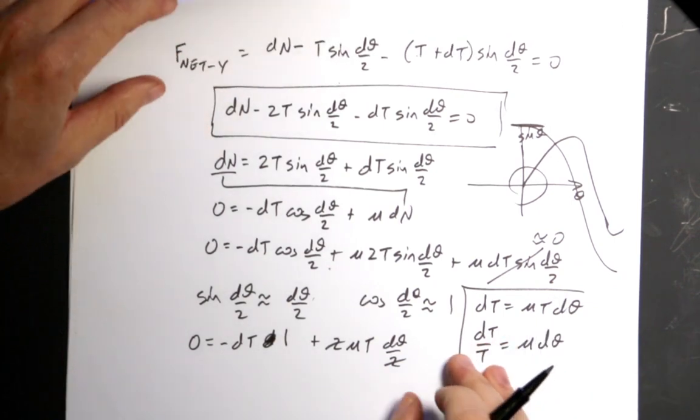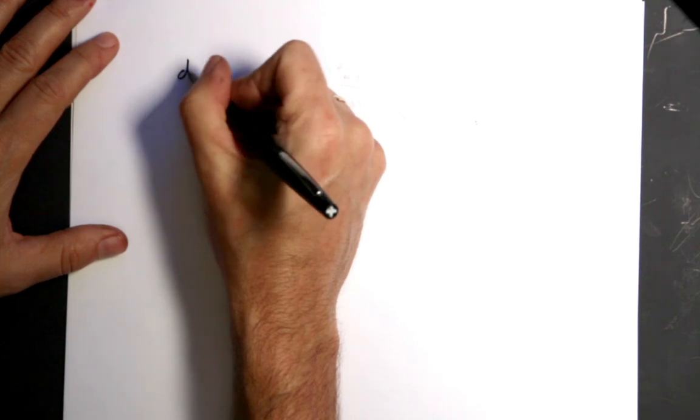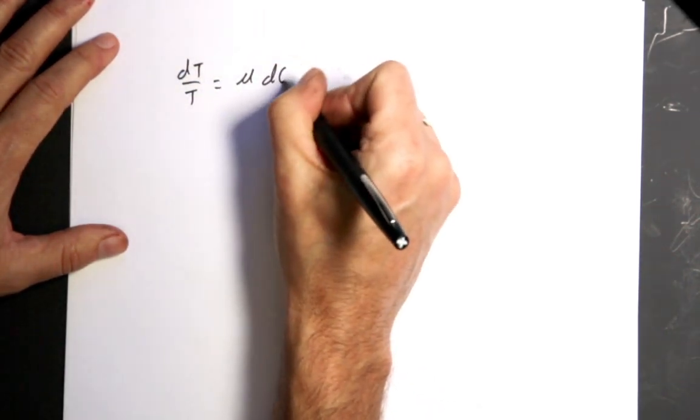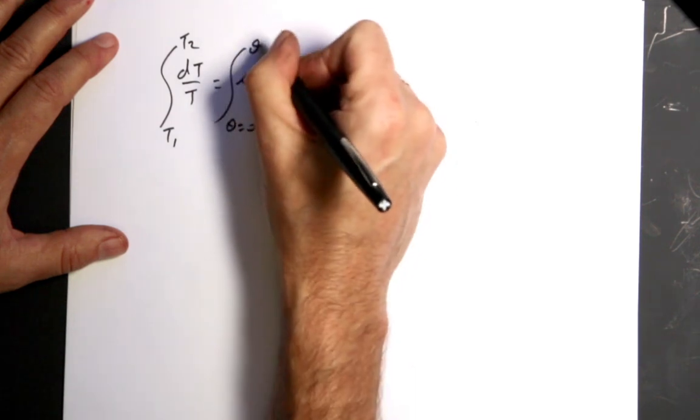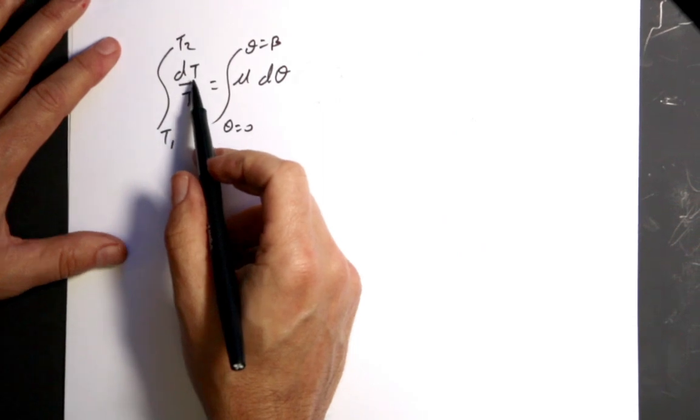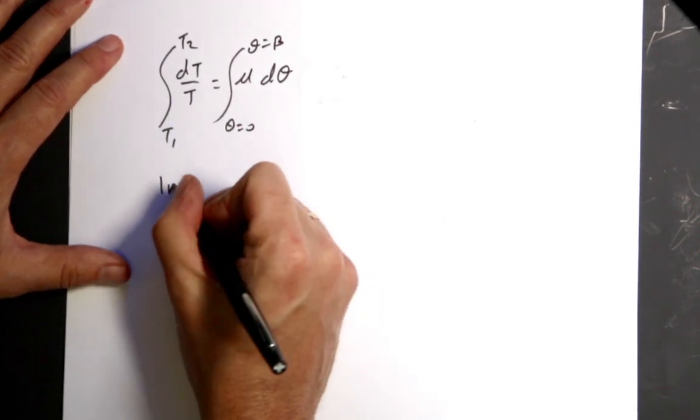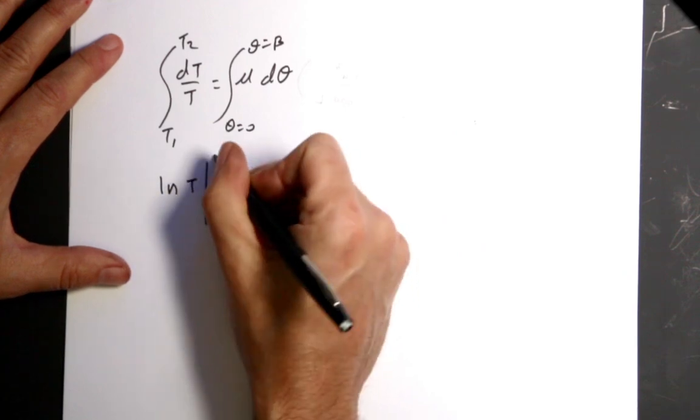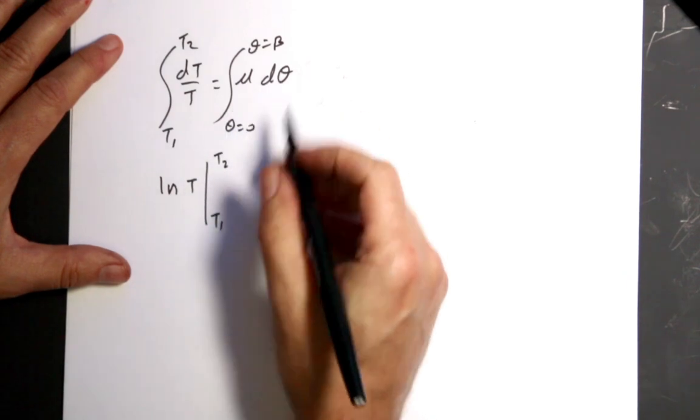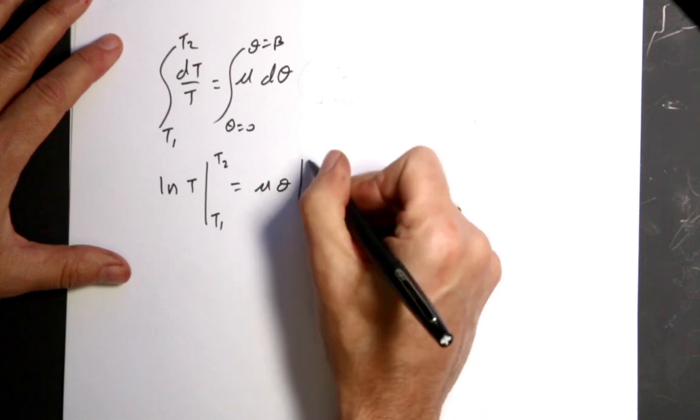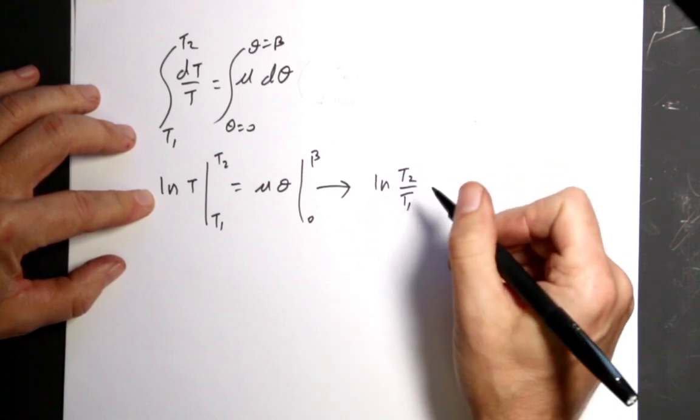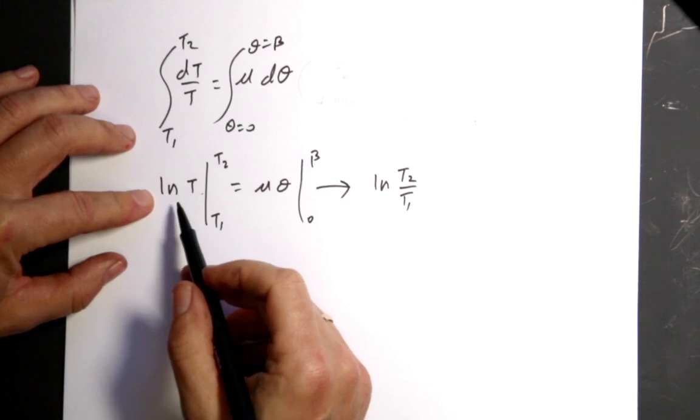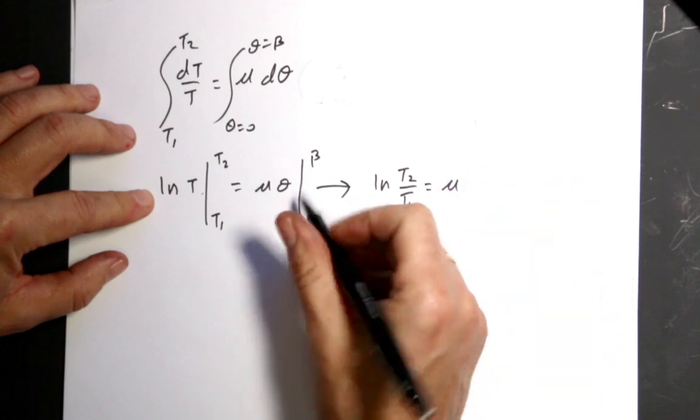Now you know what we do. We can integrate both sides. So I get DT over T equals mu D theta. Integrate from T1 to T2. From theta from equals 0 to theta equals beta. So this side, if I integrate DT over T, that is going to be the natural log. So I get the natural log of T from T1 to T2. And on this side, I just have mu as a constant. So if I integrate D theta, I just get mu theta from 0 to beta. So over here, that means I get the natural log of T2 divided by T1, which is good, right? Because we never like to write this in physics because you can't take the natural log of something with units. And this is going to be equal to mu times beta minus 0, or just beta.